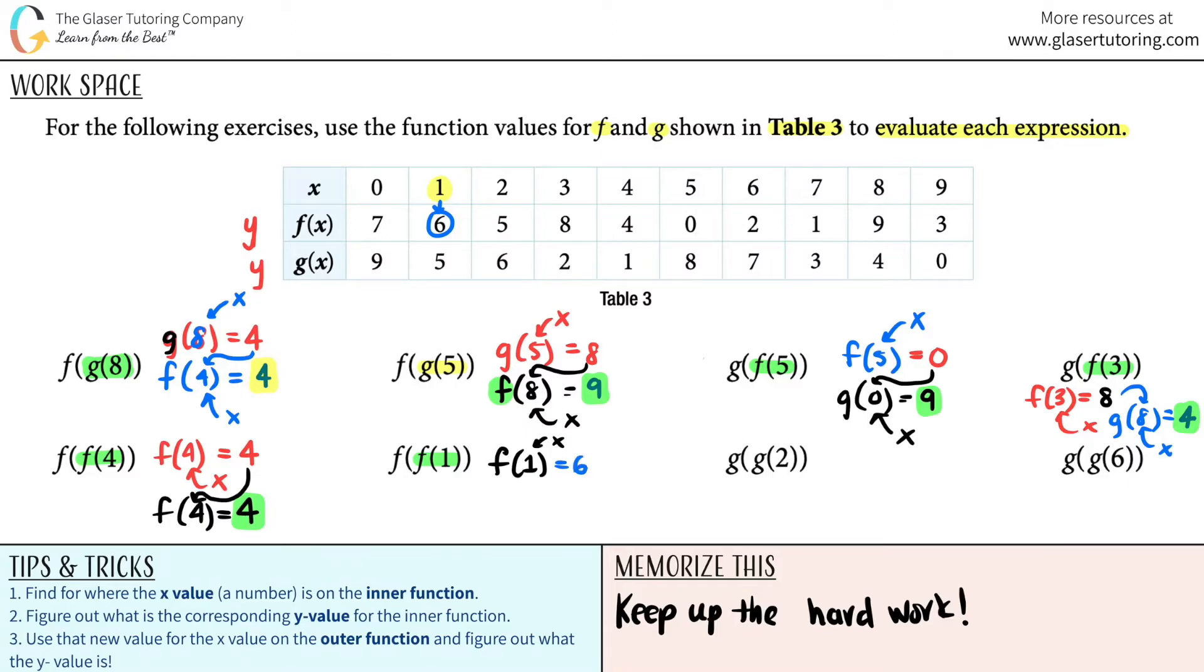And now we move to the outer function. f of, because the outside was f, f of 6. And that's your new x function. So 6 is over here for the x. I got to go down to the f. It's a 2. And there you go.